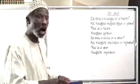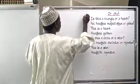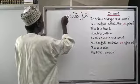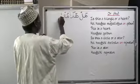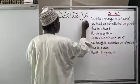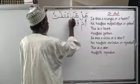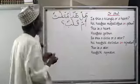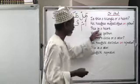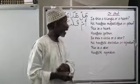So, is this a triangle or a heart? In Arabic: هَلْ هَذَا مُثَلَّثٌ أَمْ قَلْبٌ. The answer in this case is: this is a heart — هَذَا قَلْبٌ.